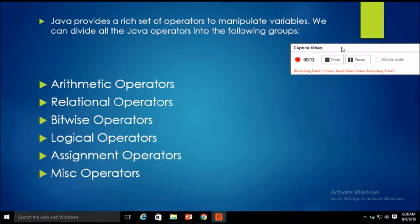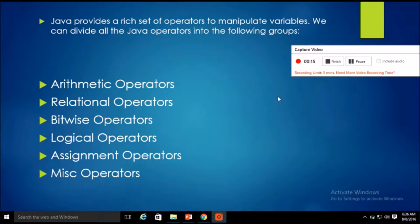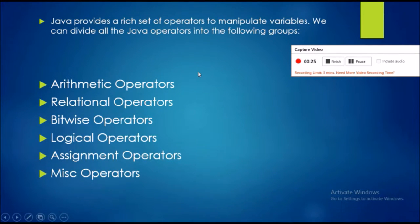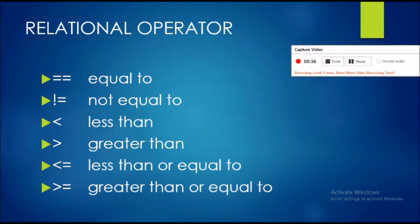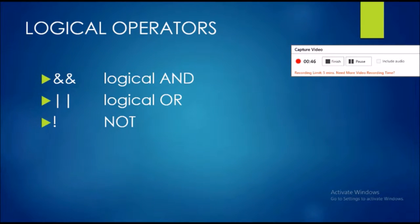Here are the basic operators: arithmetic, relational, bitwise, logical, assignment, and misc. We are going to learn about the most commonly used ones — arithmetic, relational, logical, and assignment. Arithmetic operators are used for calculations like addition and subtraction. Relational operators compare two values, such as equal to, greater than, or less than. Logical operators perform AND, OR, and NOT operations.